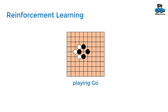Reinforcement learning is applied if you have a result from your decision. For example, playing Go means that you win or you lose. If you win, your machine learning algorithm was good — you can keep it or improve it. If you lose, your strategy was not so good, so you discard it.